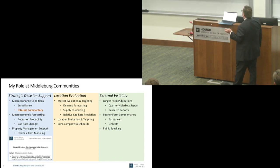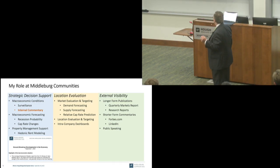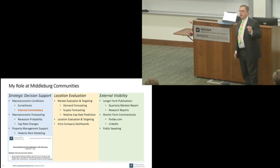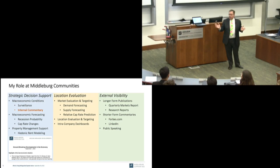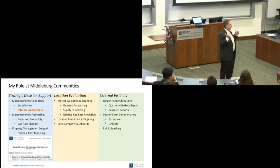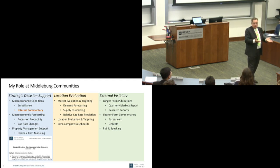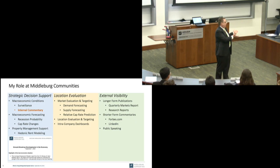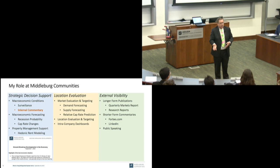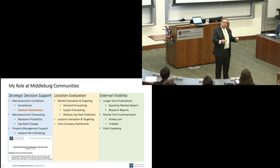Here's an example of strategic decision support. I send an email to every person in the company at least once a month — from the people renting apartments at the front desk to the people fixing broken toilets. It says: here's what's happening in the macroeconomy, here's what I think it means for us and the country, here are coming things that will be important to us. For example, people are talking about the slope of the yield curve — what does that mean, how do we use it?